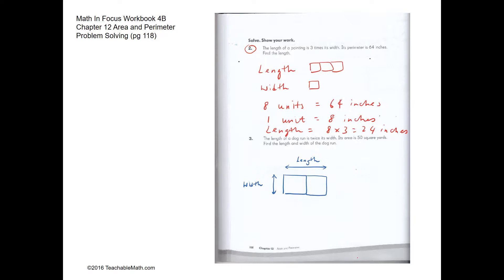For problem solving question 2, the length of the painting is 3 times the width. So we have the length here, and this is 3 times the width. The perimeter is 64 inches. The perimeter essentially means length times 2 plus width times 2. There are two lengths and two widths. So if we have two lengths, there will be six units, and two widths will be two units — giving us eight units total.